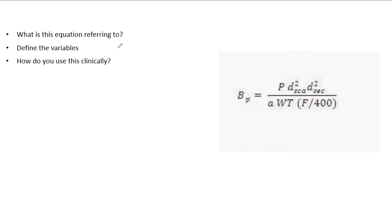So simply, what is this equation? How is it used? Define the variables and how do you use it clinically? First of all, the B can thankfully help us — it is a barrier transmission factor for scatter from the patient. Remember, we have barrier transmission factors for leakage and scatter, and this specifically is scatter. As we break down some of these variables, that can help you remember this big nasty equation.